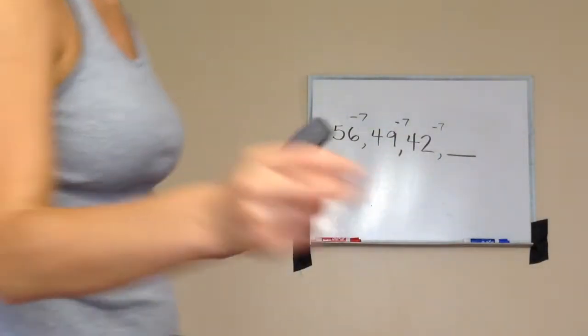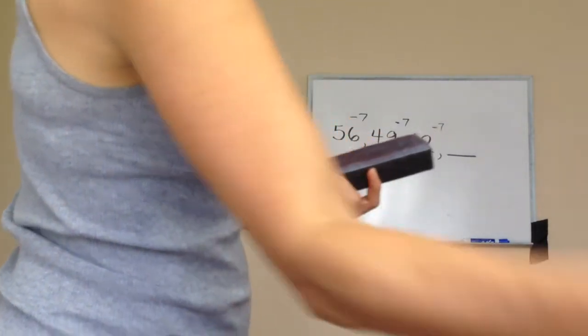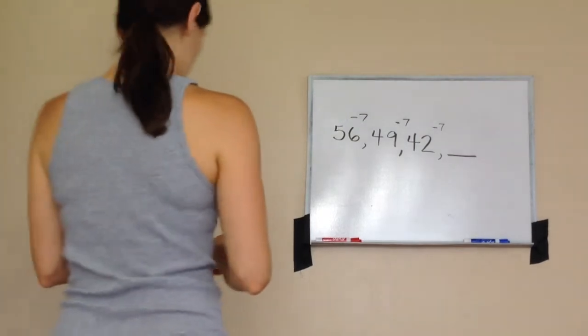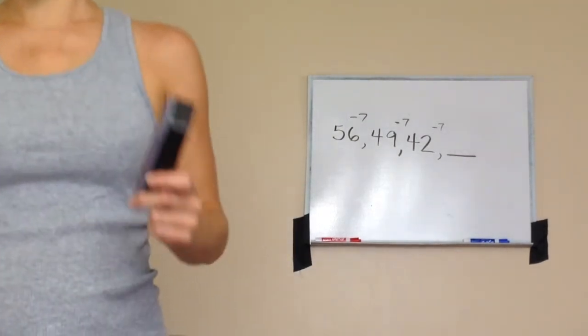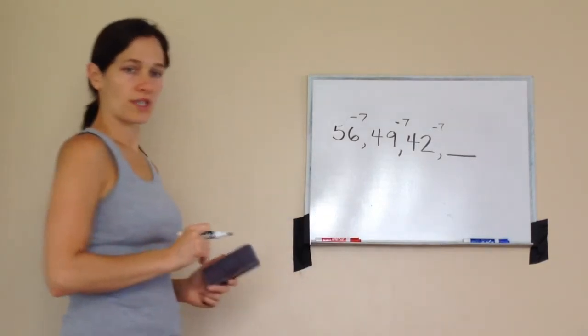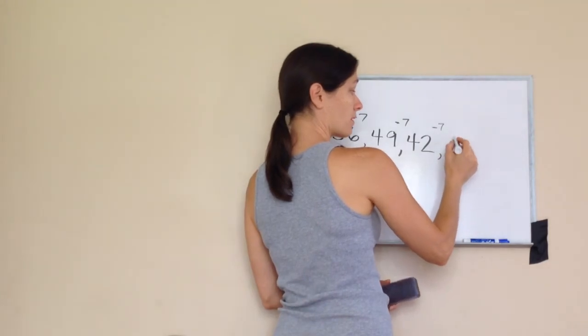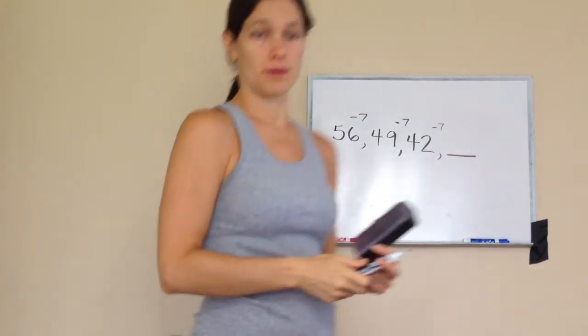So then you go seven from that. Yes, almost got it. Three. Three. So what is it going to be? Seven to three would be, oh we can't do that, so it has to borrow from what? No.